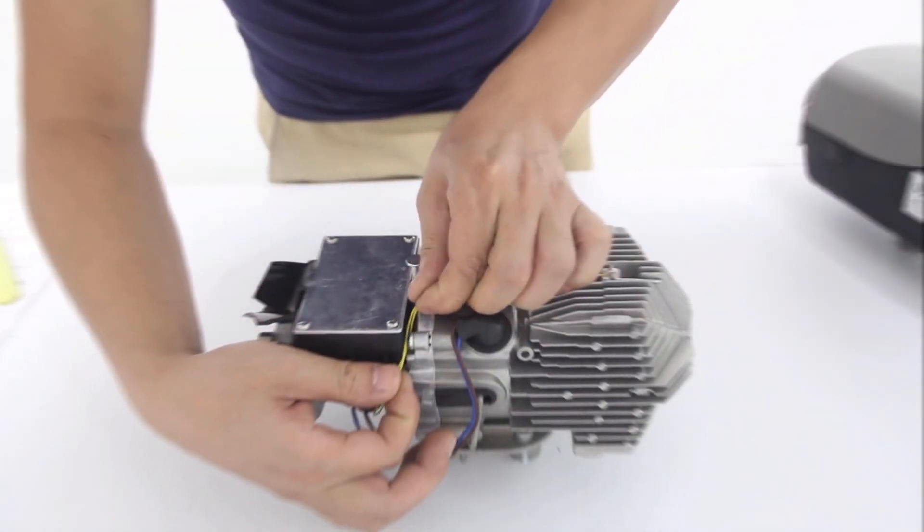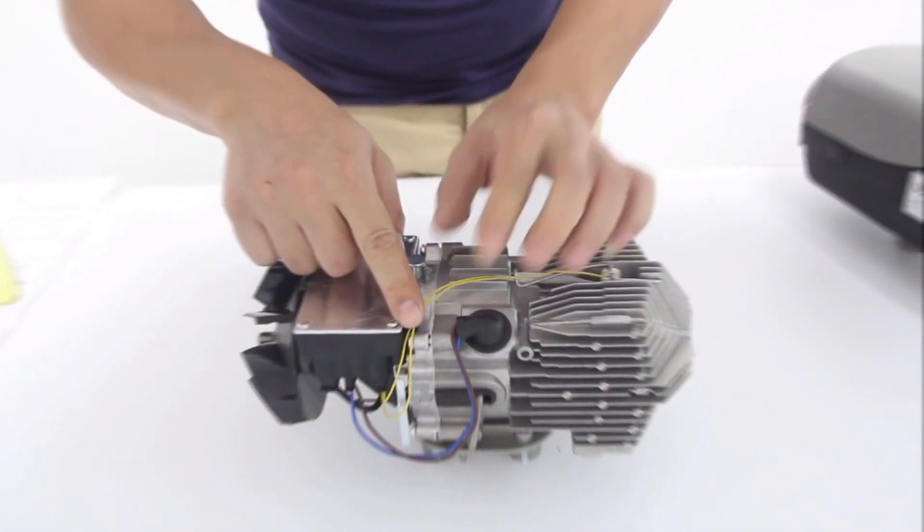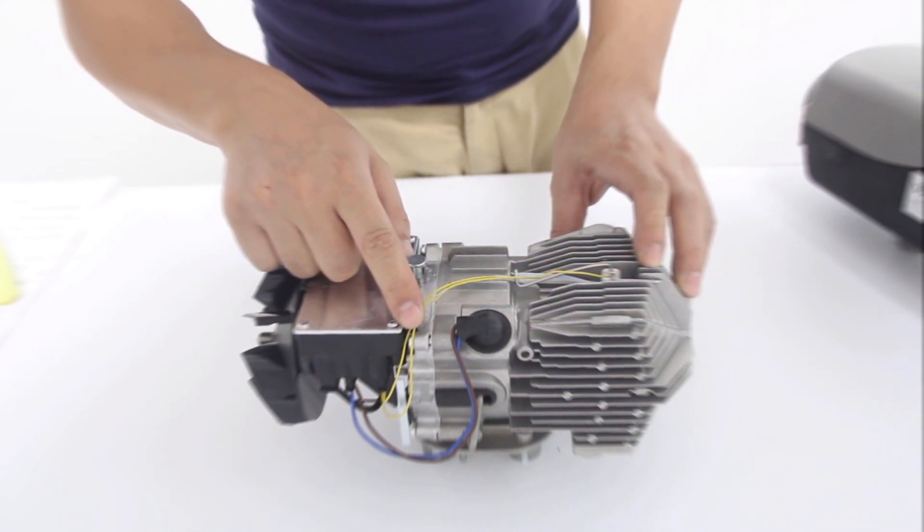We also need to thoroughly check the temperature sensor's wires, making sure they are shielded and not going to get crimped with the heater's housing as we put it back together.